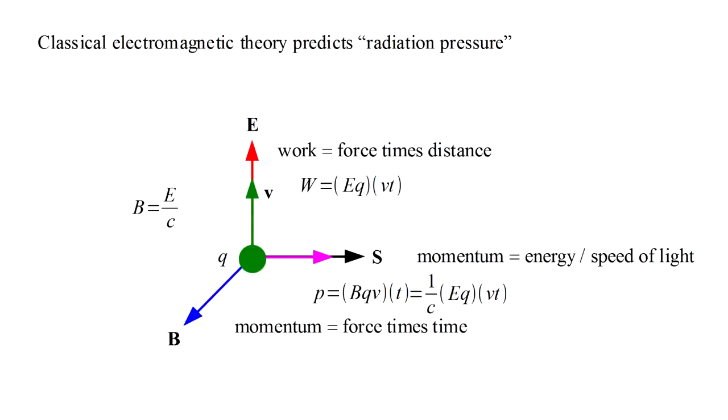Back in video two, we saw that classical electromagnetic theory explains how absorbed radiation exerts pressure, and this is consistent with photons having linear momentum. Here we want to see if there is an analogous way to understand photon angular momentum.